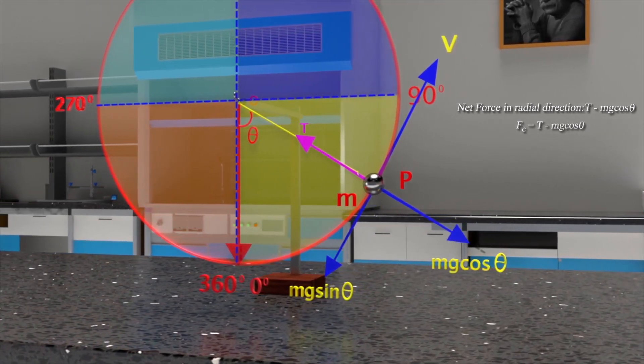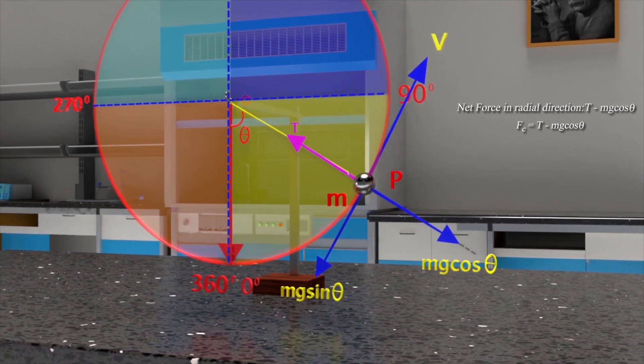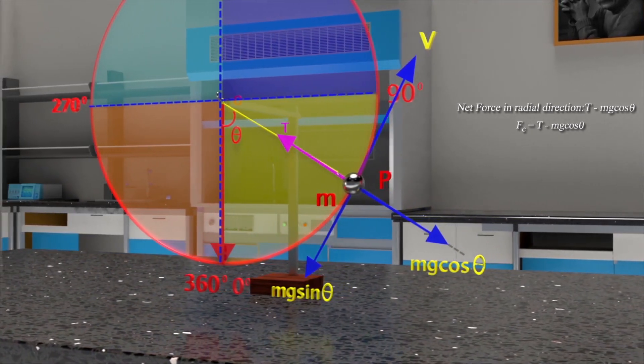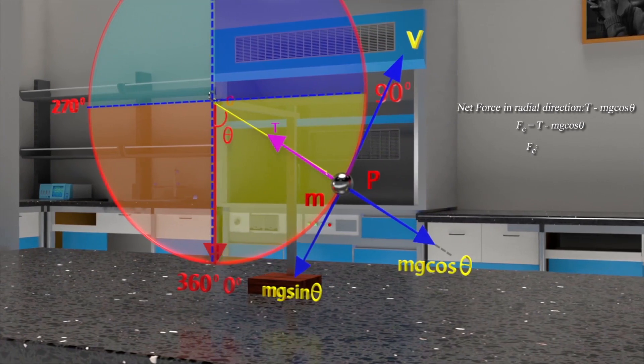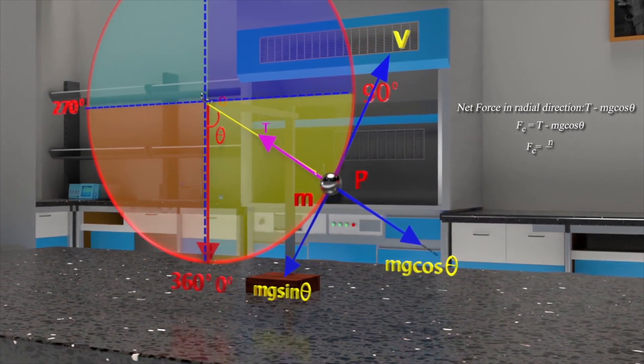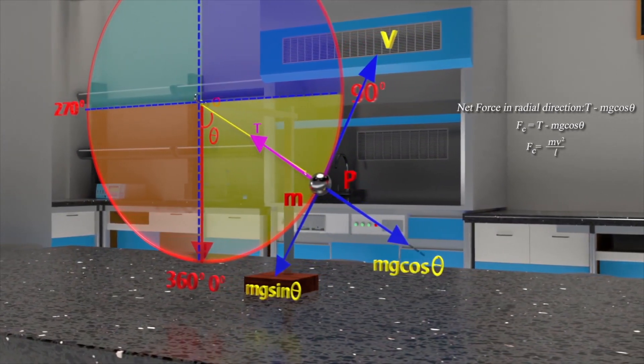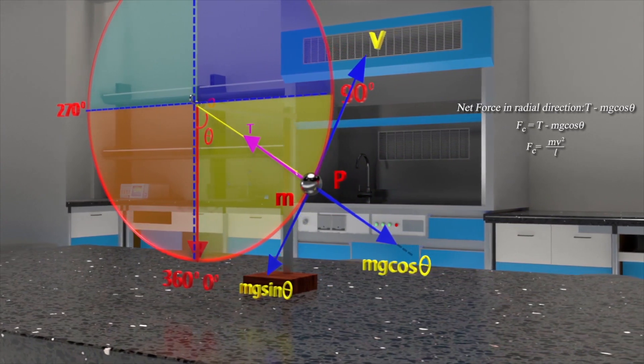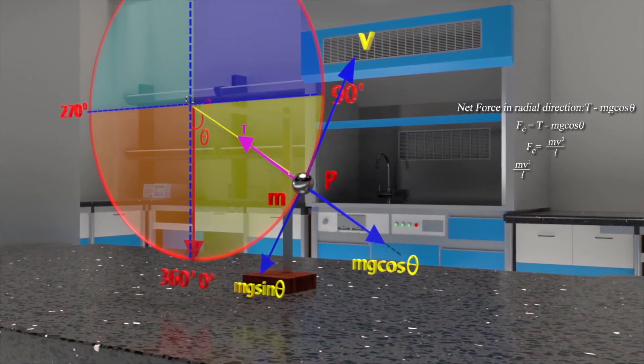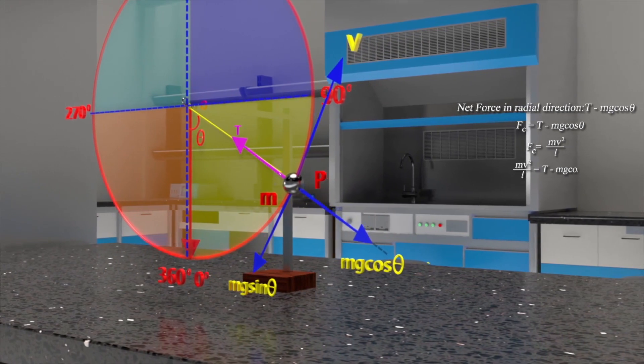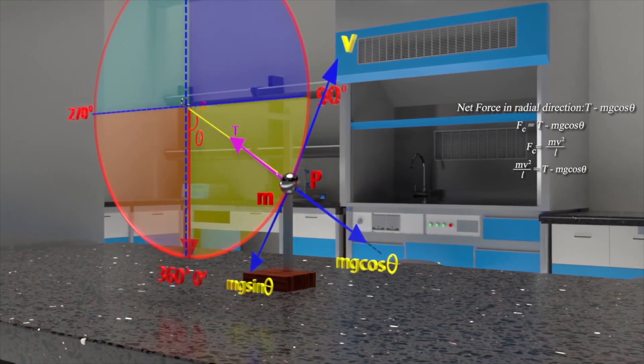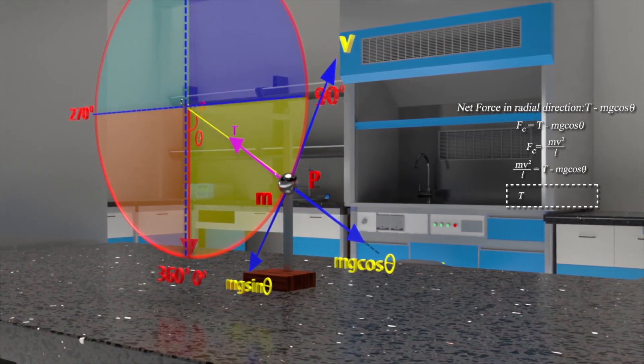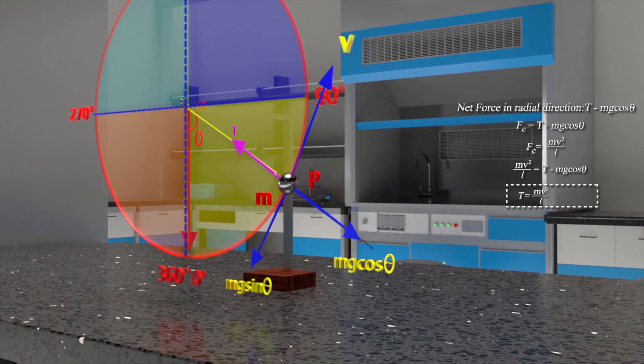But we know that the centripetal force required to keep the mass M moving with tangential speed V in a circular motion of radius L is equal to Mv square by L. Therefore, Mv square by L is equal to T minus Mg cos theta. Hence, tension in the string is Mv square by L plus Mg cos theta.